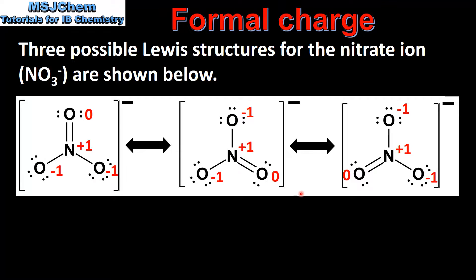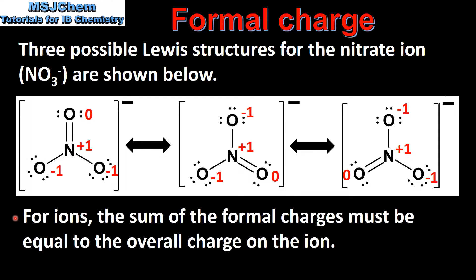If we look at the other two Lewis structures we can see that the formal charges are the same. For ions, the sum of the formal charges must be equal to the overall charge on the ion. The overall charge on the nitrate ion is one negative, and the sum of the formal charges is the same.